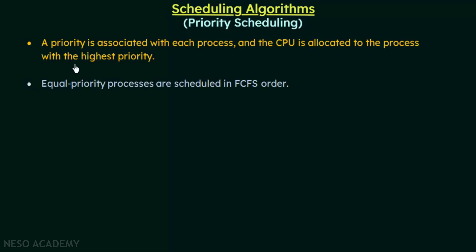In priority scheduling, a priority is associated with each process, and the CPU is allocated to the process with the highest priority. The process with the highest priority will be given the CPU first, then the process with the next highest priority, and so on. If two or more processes have equal priority, they will be scheduled in FCFS order — the process that arrived first will be given the CPU first.